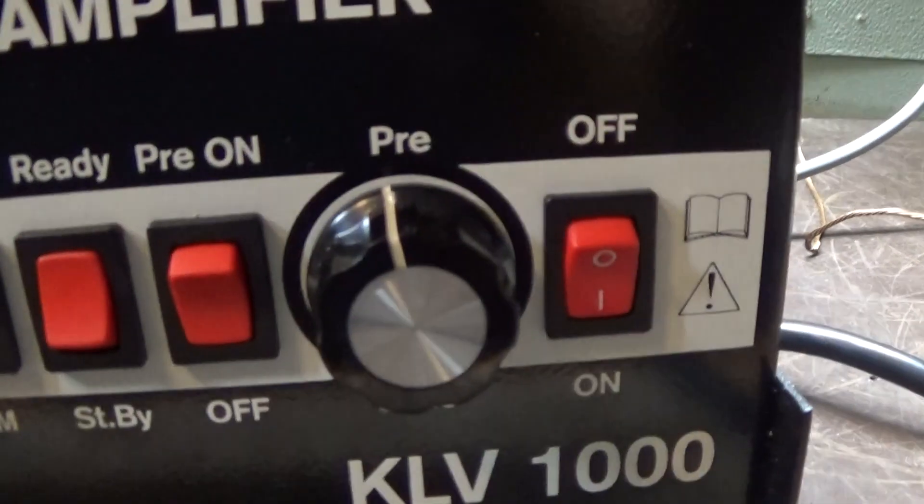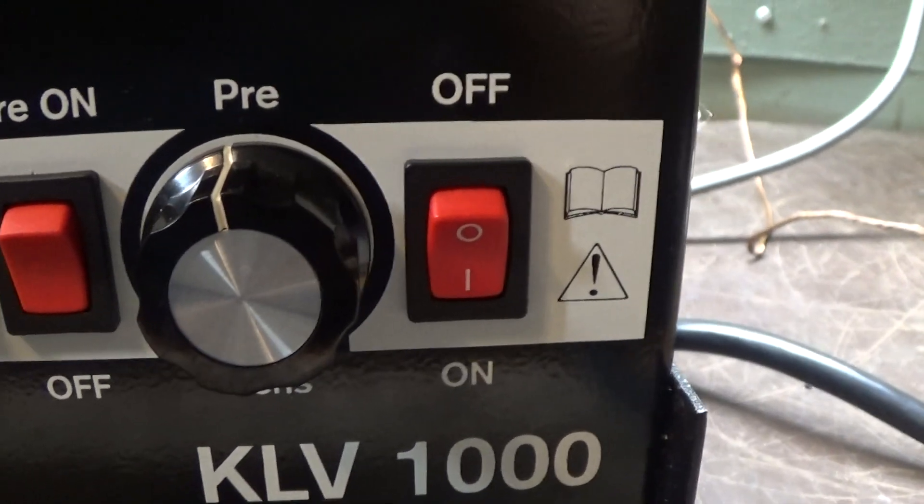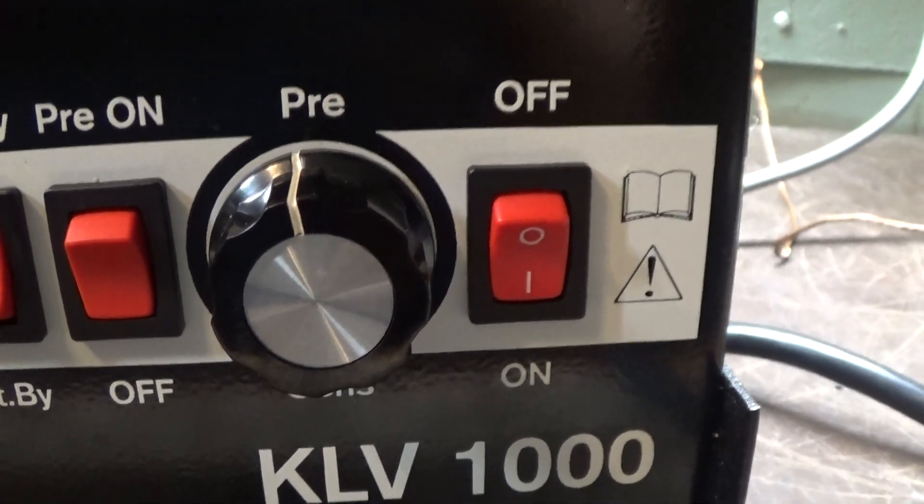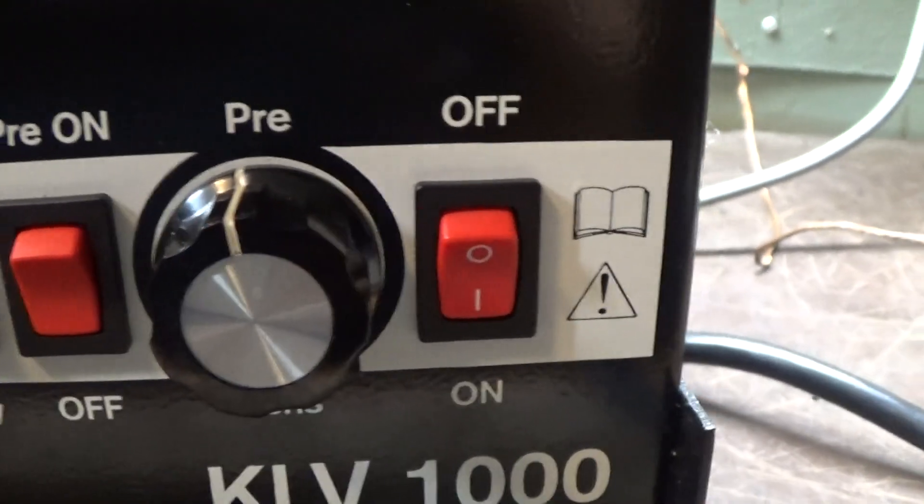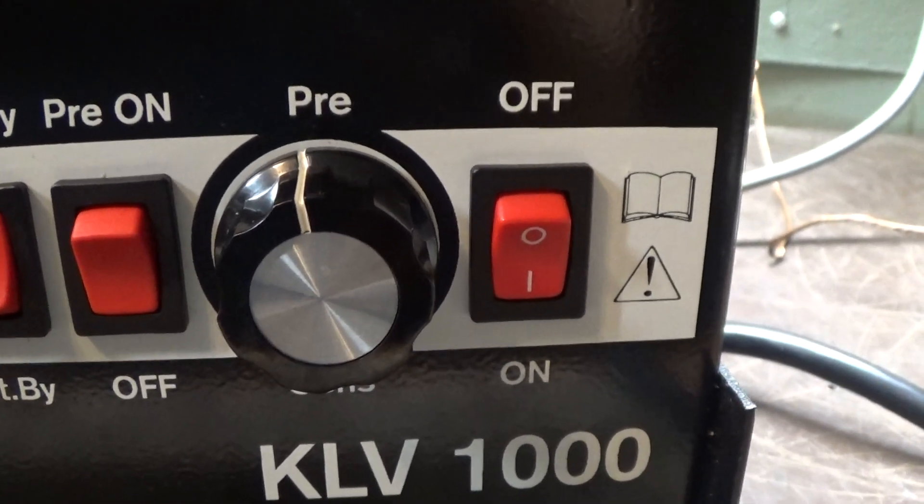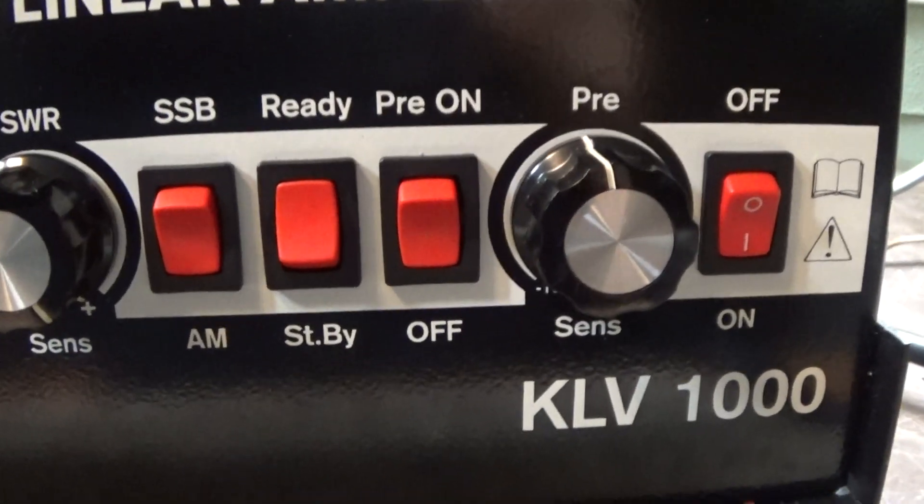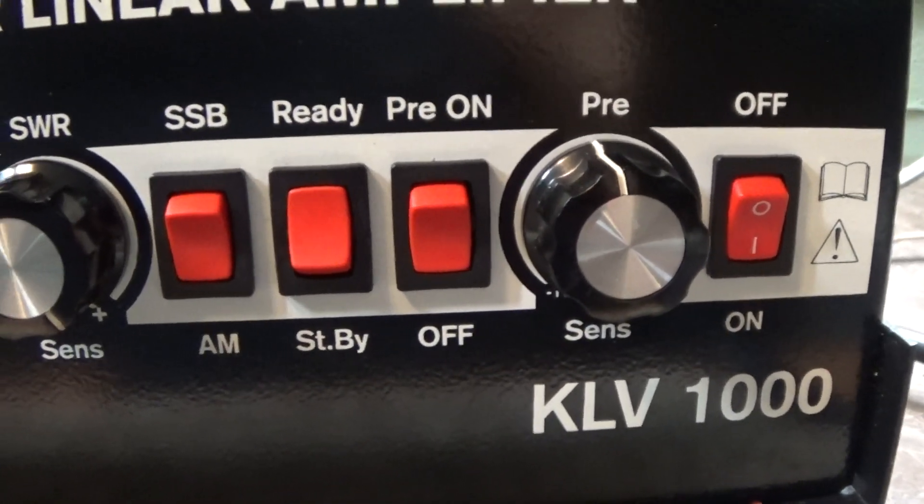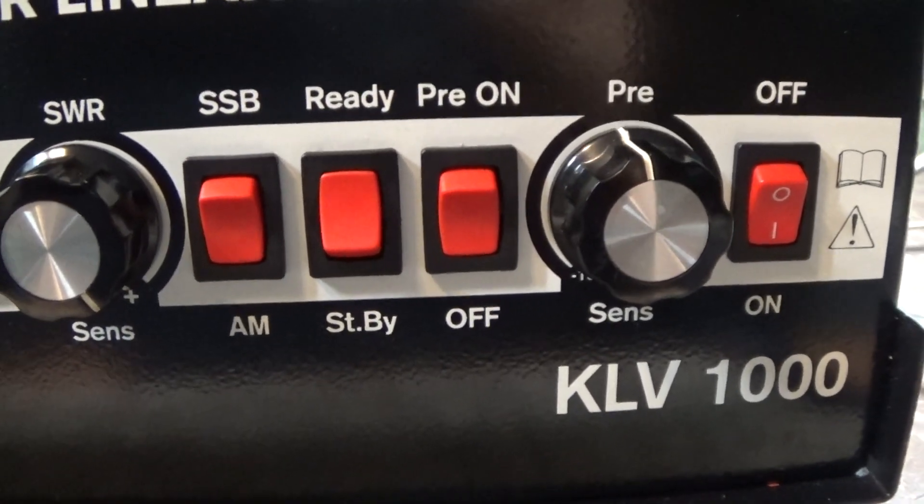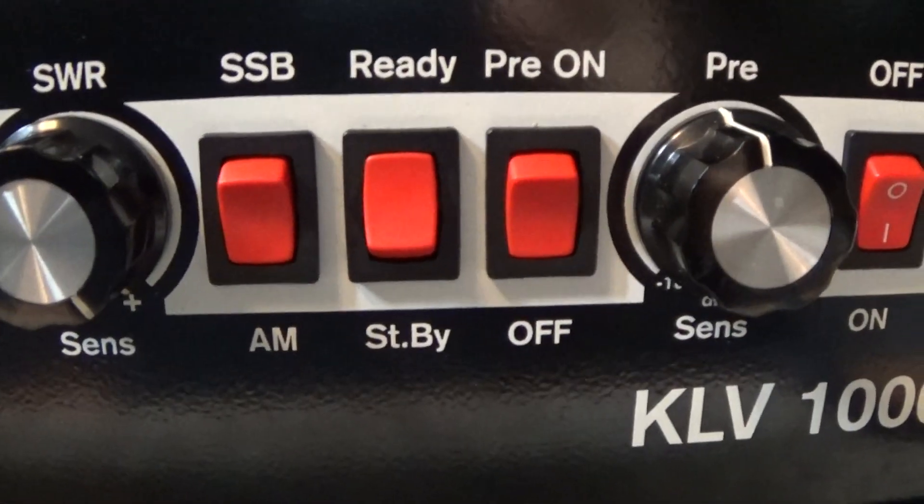Before I fire it up, going across you got the main power switch right here. I find it interesting that it's mounted what I consider kind of upside down with down being on and up being off. It's clearly marked that way and even on my 1000P is the same thing. That knob there is for the preamp, it turns the preamp gain up or down, it can turn it down minus 10 dB or up to plus 10 dB and preamp on switch.